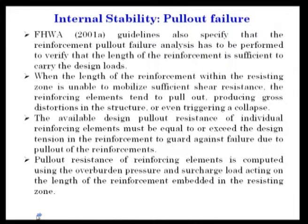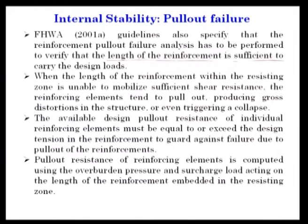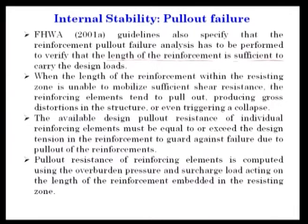FHWA guidelines specify that reinforcement pullout failure analysis must be performed to verify the length of reinforcement is sufficient to carry design loads. When the length within the resisting zone is unable to mobilize sufficient shear resistance, reinforcing elements tend to pull out, producing gross distortion or even triggering collapse. The available design pullout resistance of individual reinforcing elements must equal or exceed the design tension.